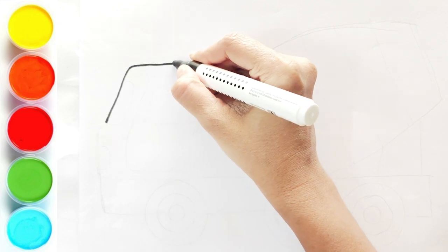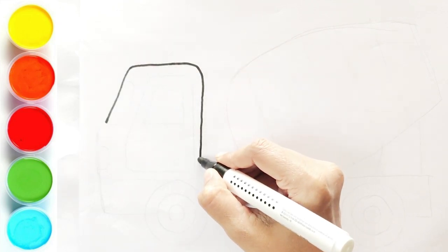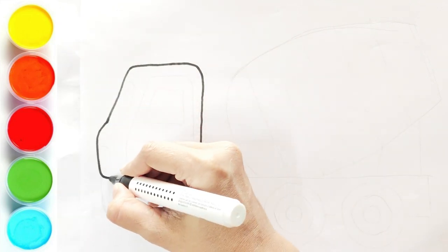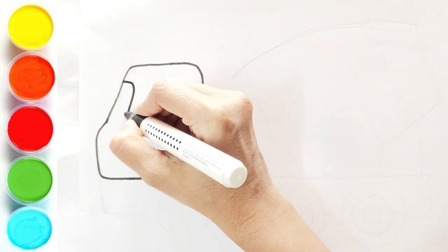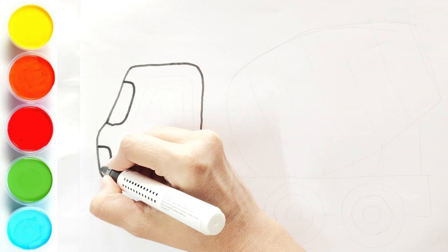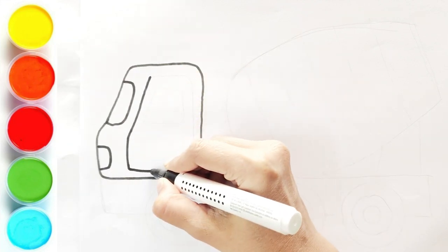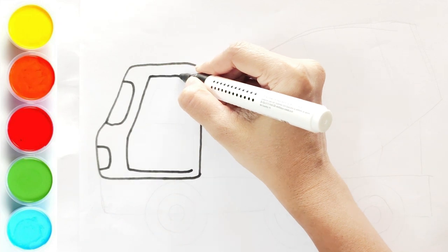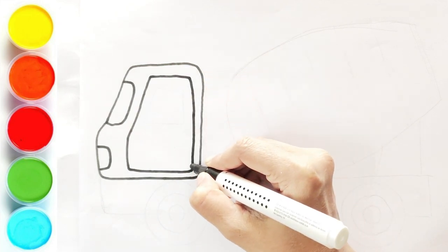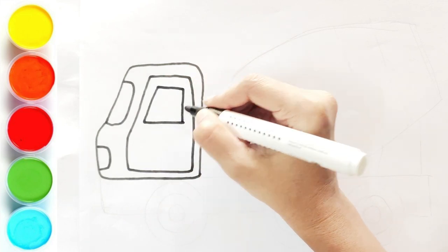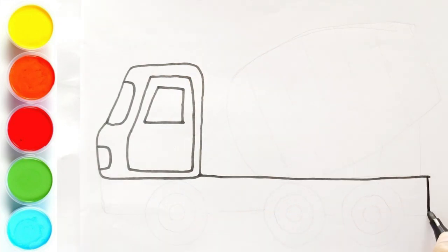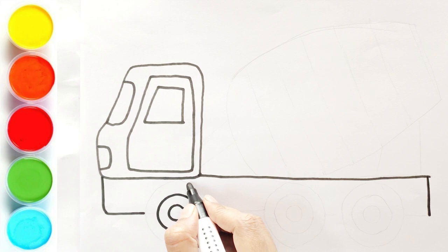Let's draw the front portion of the cement mixer. Now let's draw wheels.